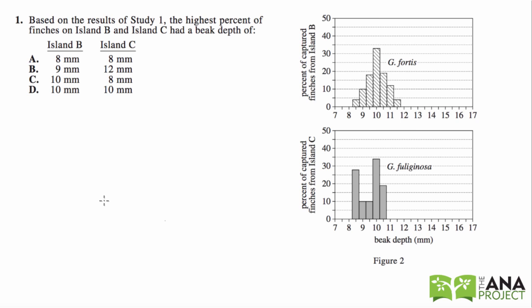So let's start with number one. Now, again, according to the intro, remember don't look at the experiment. You don't have time. You have about 50 seconds per question, so we're going to go straight to the first problem. So read the problem. Based on the results of study one, this is important because this is a clue in terms of where we're going to look. Study one, the highest percent of finches on island B and island C had a beak depth of.